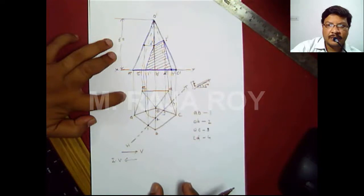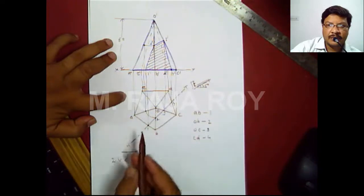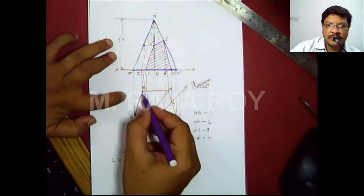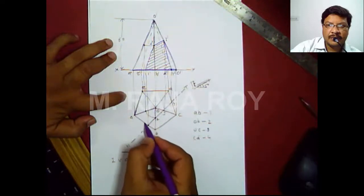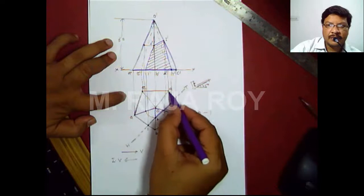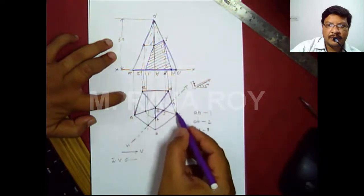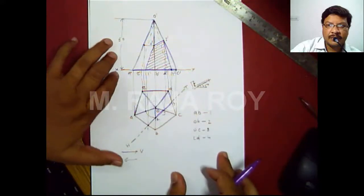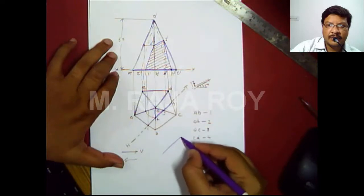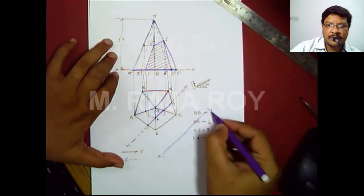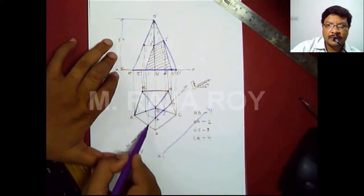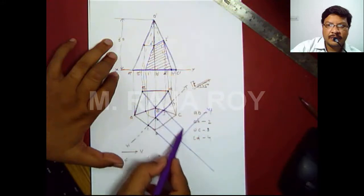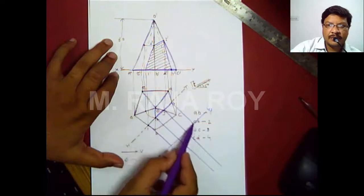Now you have to draw the true shape of the section. In the top view, retain this part and remove the cut portion. Take an auxiliary plane x1y1 somewhere here and draw the projectors from points 1, 2, 3 and 4.